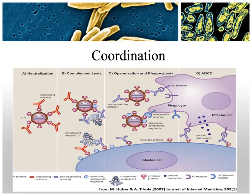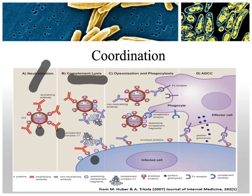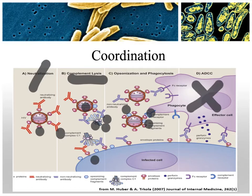Antibodies work in coordination with other antibodies or complement proteins in several ways. In neutralization, antibodies tie up the antigen binding sites on a virus like HIV so it can't bind to and infect your cells. In complement lysis, antibodies hold complement proteins in position to attack the cell. In opsonization, complement proteins mark cells for destruction so phagocytes can eat them up.